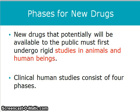New drugs that potentially will be available to the public must first undergo rigid studies in animals and human beings. Clinical human studies consist of four phases.